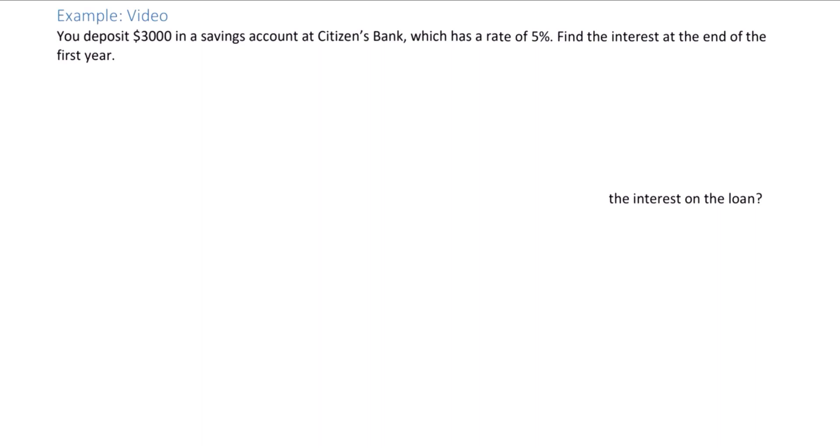In this video we'll be looking at simple interest. You deposit $3,000 in a savings account at Citizens Bank which has a rate of 5%. Find the interest at the end of the first year.